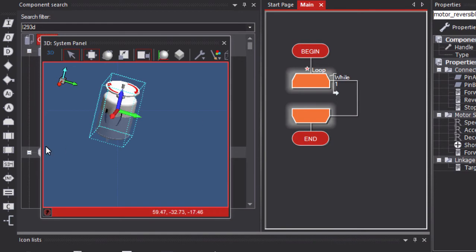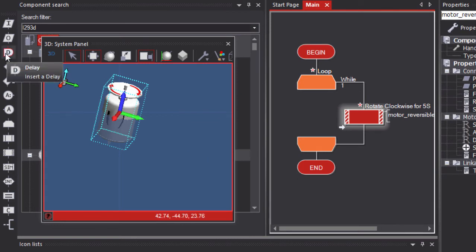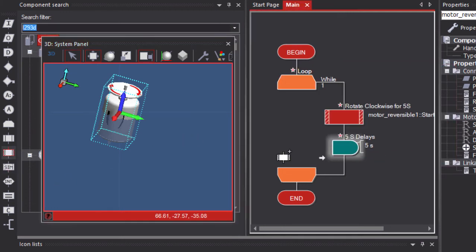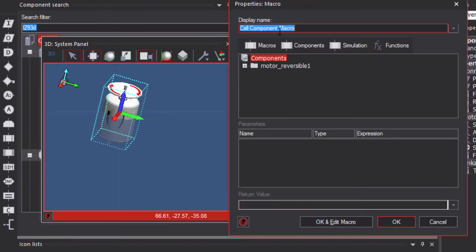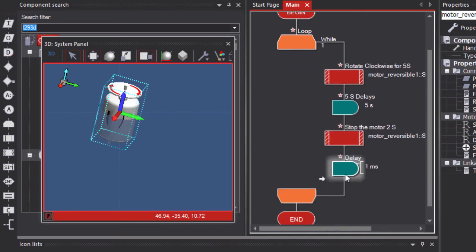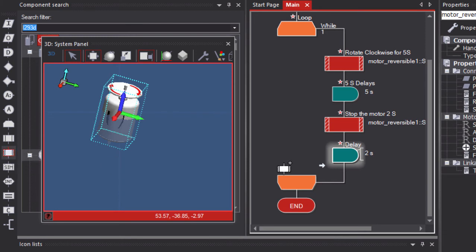Then I'm going to need a delay icon. 5 second delay. Then I'm going to stop the motor. Stop the motor 2 seconds. Stop. Delay. OK, it's going to be 2 seconds.